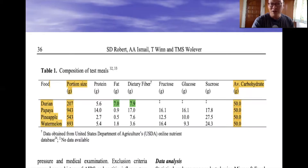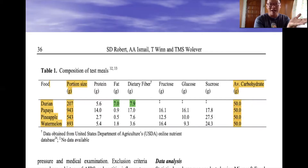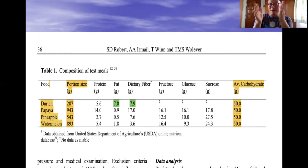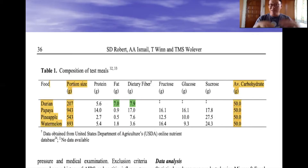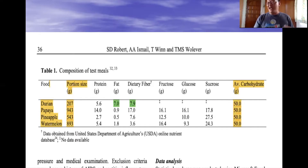The portion sizes were: 207 grams of durian, 943 grams of papaya, 543 grams of pineapple, and 893 grams of watermelon — each being the equivalent of 50 grams of carbohydrates from those respective fruits. On the first day the baseline sugar response was measured using pure sugar. Then the following day the 10 volunteers came back and took the 50-gram carbohydrate equivalent of durian, with blood sugar measured for the next two hours.